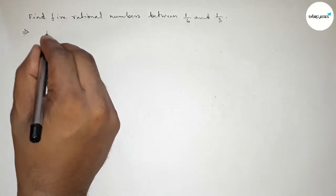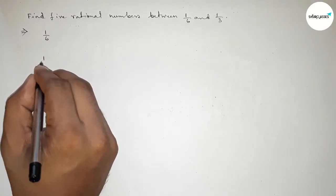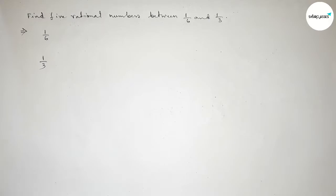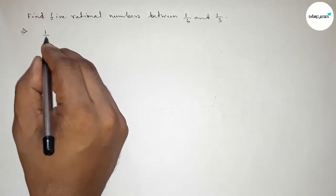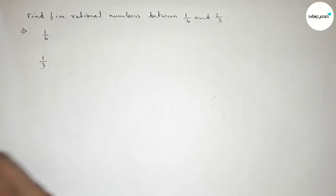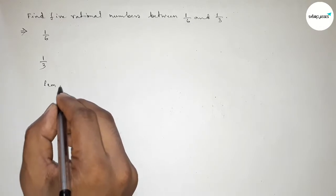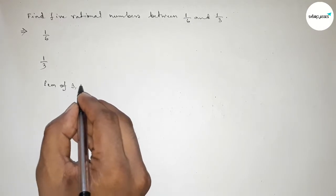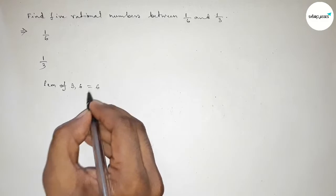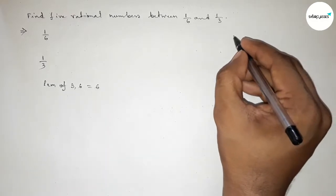Here given two numbers 1 over 6 and 1 over 3, and here the denominator of both numbers are not same. So first we have to find out the LCM of 6 and 3, and the LCM is obviously 6.